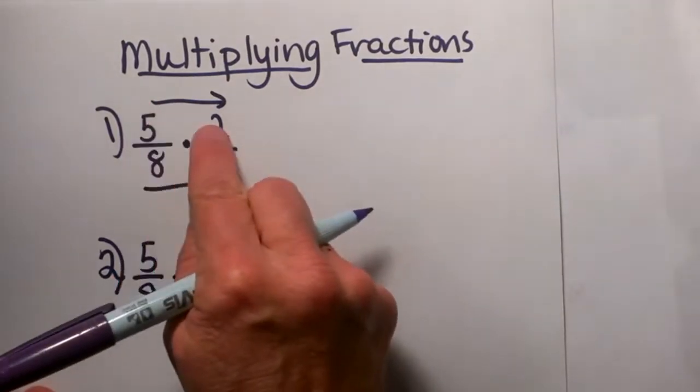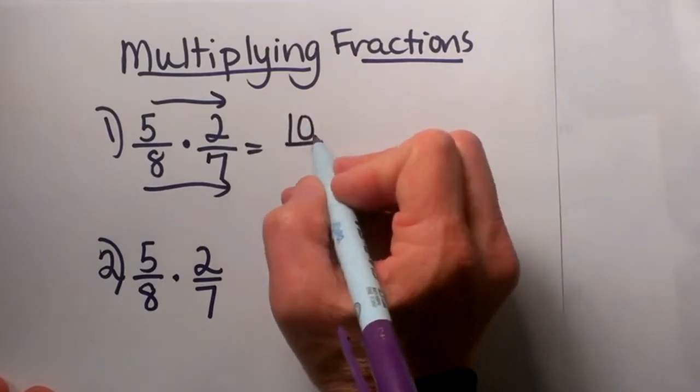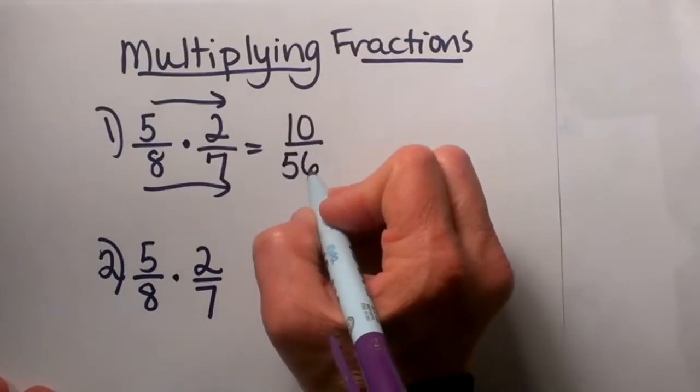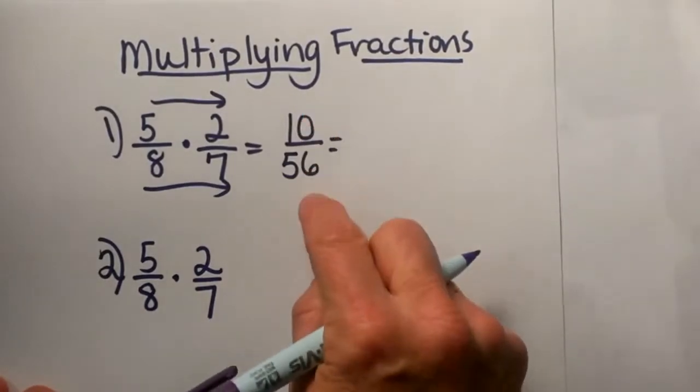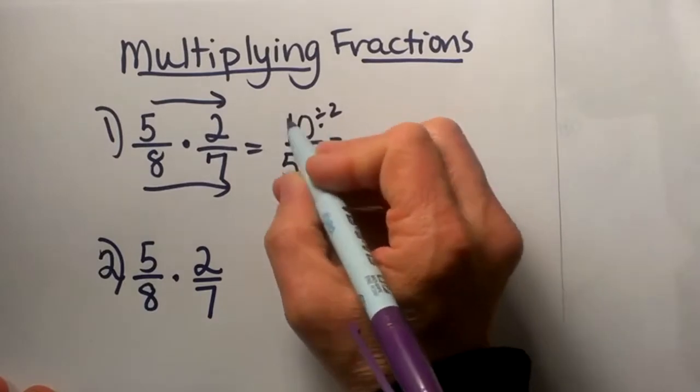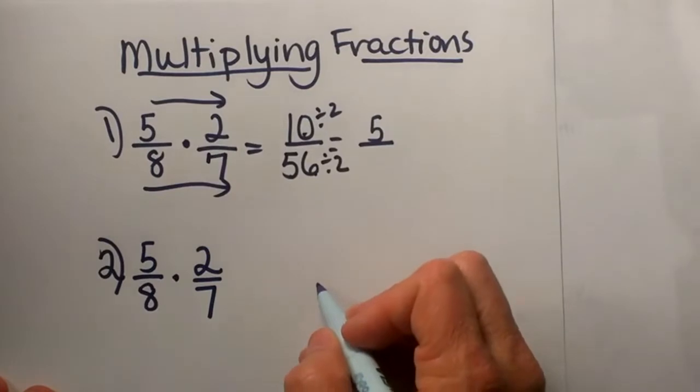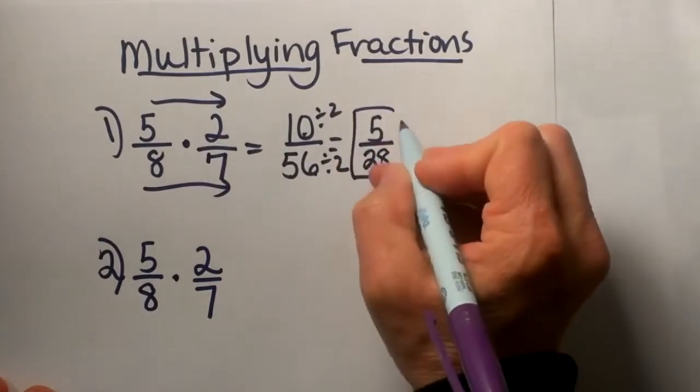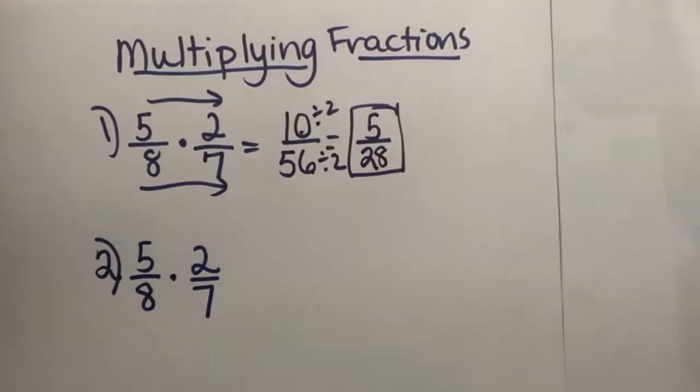We're just going to multiply the numerators together, which is the top, so I'm going to get 10, and the denominators together, so 8 times 7 is 56. Then I've got to take that answer and reduce it. Both of these are even, so I can divide them by 2. Let's divide each one of these by 2. 10 divided by 2 is 5, and 56 divided by 2 is going to give me 28. So that would be my final answer, 5 28ths, and again you can use a calculator to do some of that reducing.